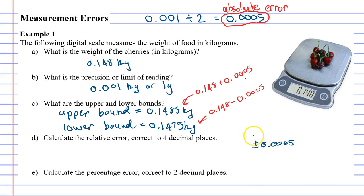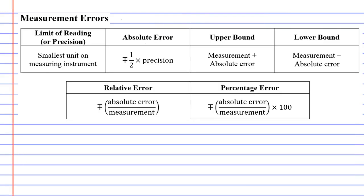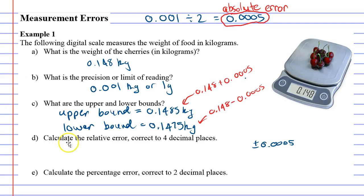Okay, now we'll do question E. And if you look at the equation, and then we'll do D afterwards, it says to go absolute error over measurement. So my absolute error is 0.0005. I'm not going to really worry about the plus or minus yet. Over my measurement 0.148. And it also says to times it by 100.